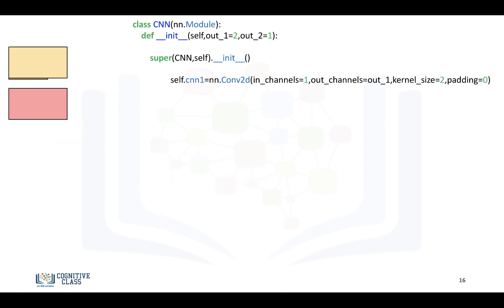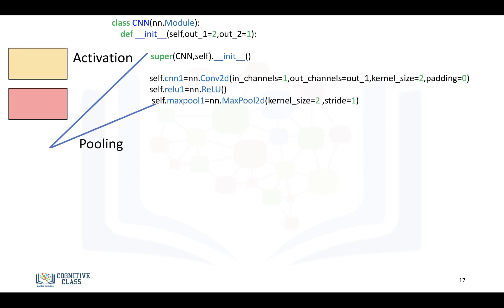So, here's our object constructor, and we'll have one in-channel because we're using grayscale, the parameter out, in this case will be two, and the kernel size and padding size, we will hard code them, because they take a little more work to determine. So, we'll add our ReLU activation and max pooling layer.